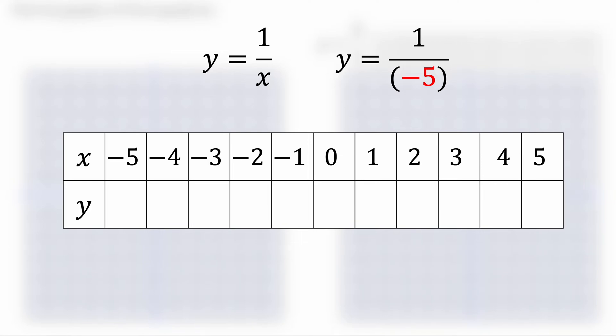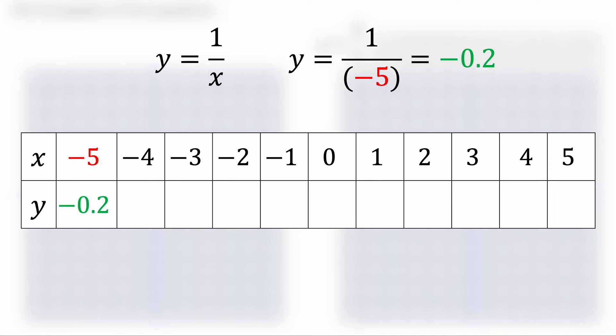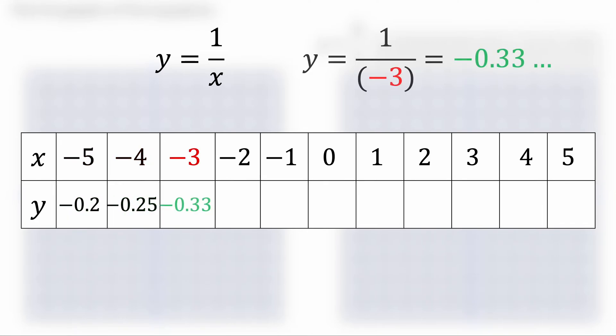I'm putting in x equals minus 5 into the equation and I get minus 0.2 out of the equation. If you're struggling, use your calculator to do this. That's absolutely fine. I can still do this with every x value and I fill in the table for my y values.